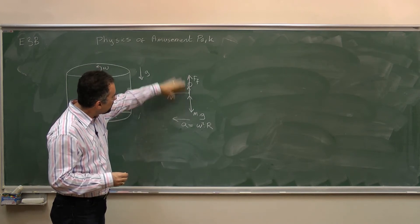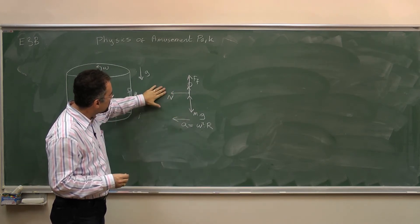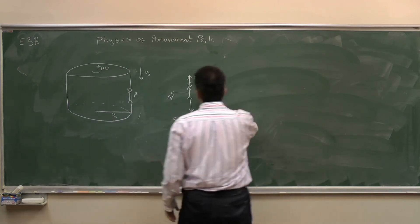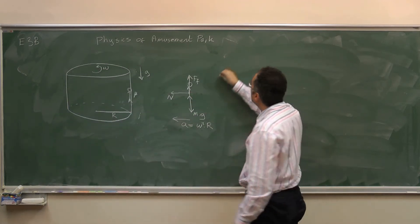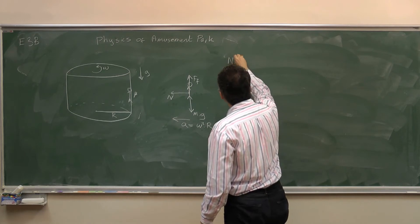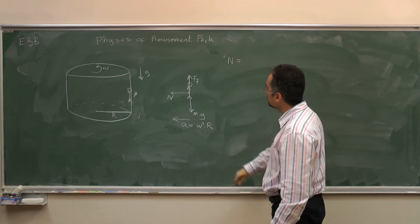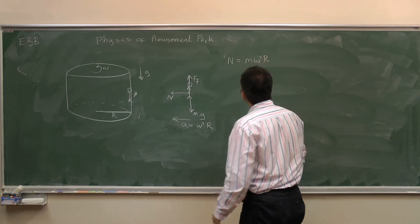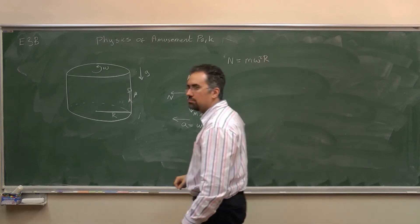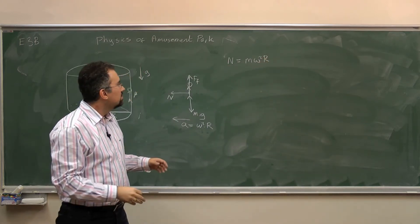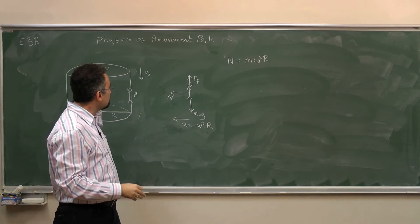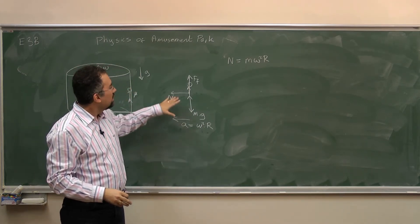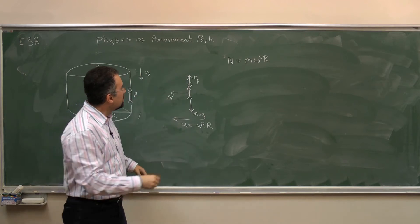There are no angles, which is nice. In the horizontal direction, the only force acting is the normal force N, which equals mass times acceleration: N = m omega squared r. Without the normal force you would not turn — you'd just go outward.